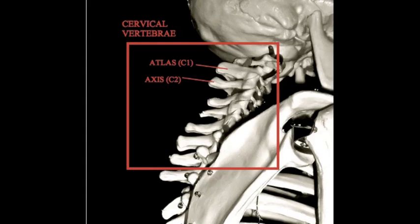In the cervical category, the very first vertebra is known as the atlas, after the titan in Greek mythology who held up the world as punishment for wrongdoing. The second bone is known as the axis.